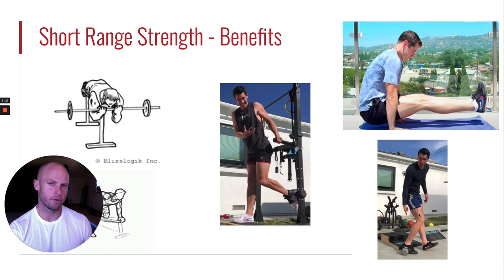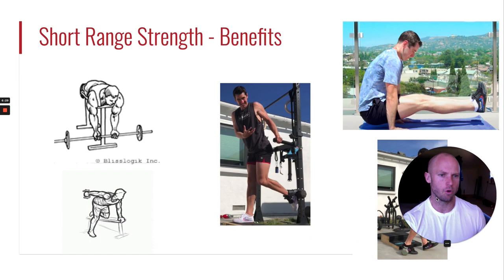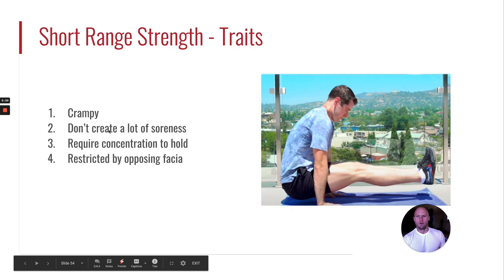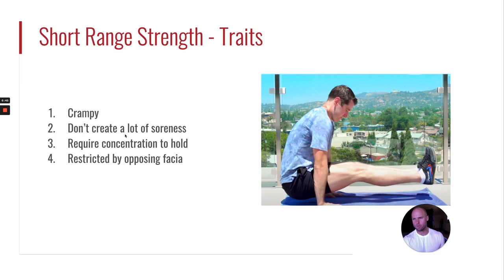These are examples of short range movements. Some of them are going to feel more crampy; some are going to be more extreme than others. To identify them, you're looking for the crampy movements, looking for movements that don't create a lot of soreness. Now, if you use them in the extreme then you will get soreness, and if you actually cramp the muscle then generally you get some soreness because the muscle kind of locks on. These movements will generally require concentration because you're really having to connect the mind to the muscle to get the work done.